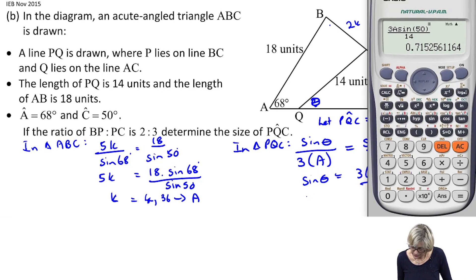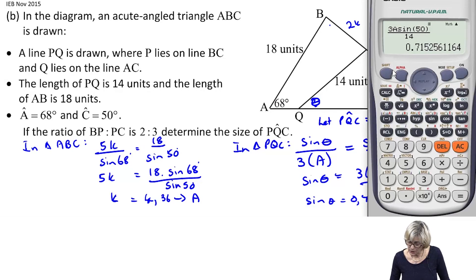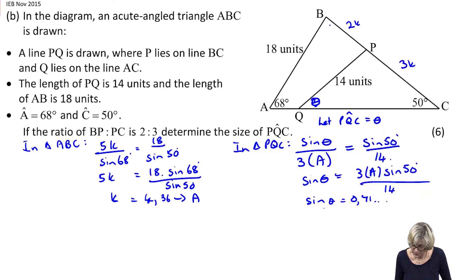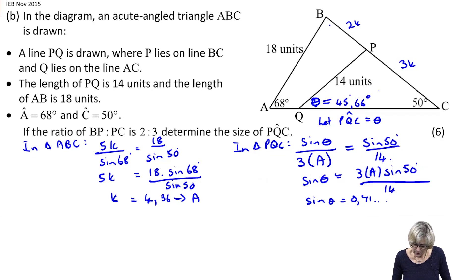So now I've got sine theta equals 0.71. To find theta I'm going to press shift sine, so I've got it on my screen—shift sine answer equals, and I get it to be 45.66. I looked at the third decimal place, it's a 4, so theta is 45.66 degrees. That's what I got that angle to be.